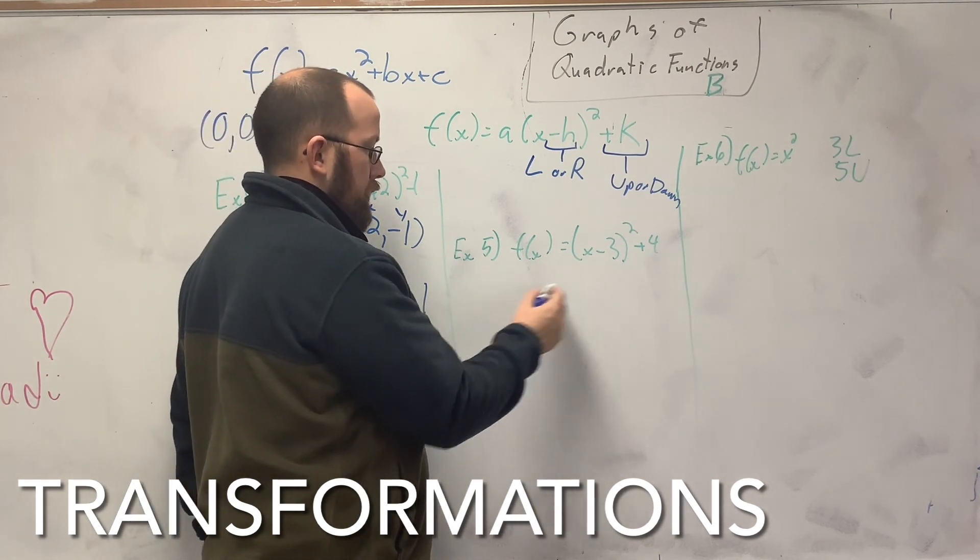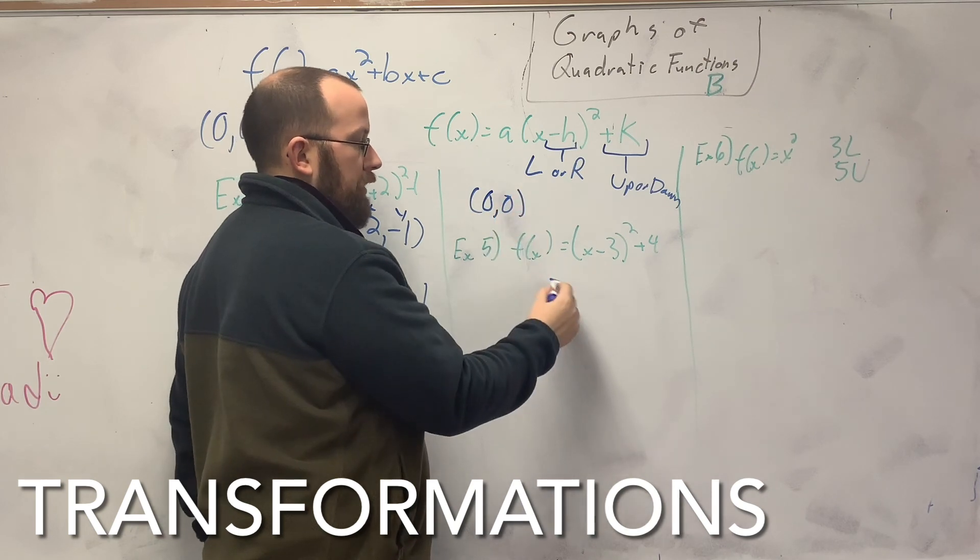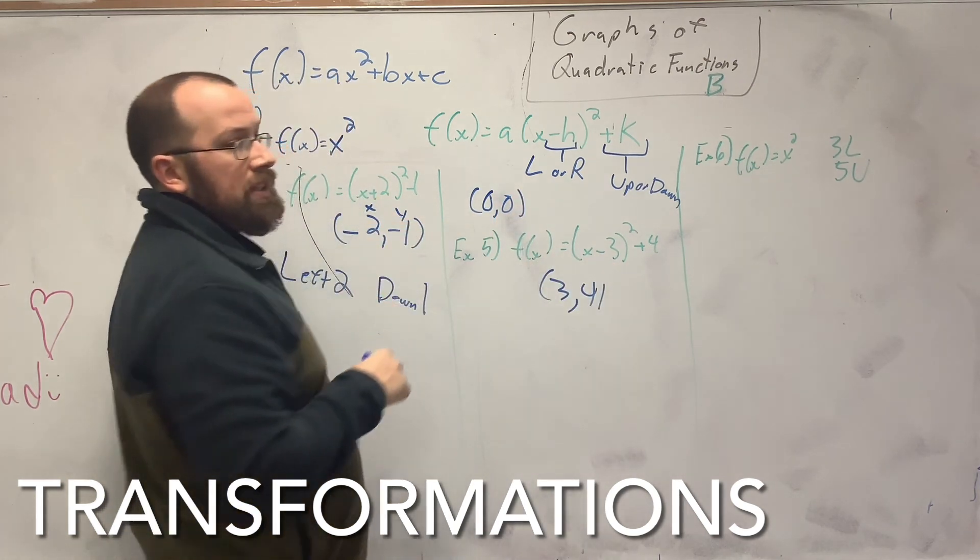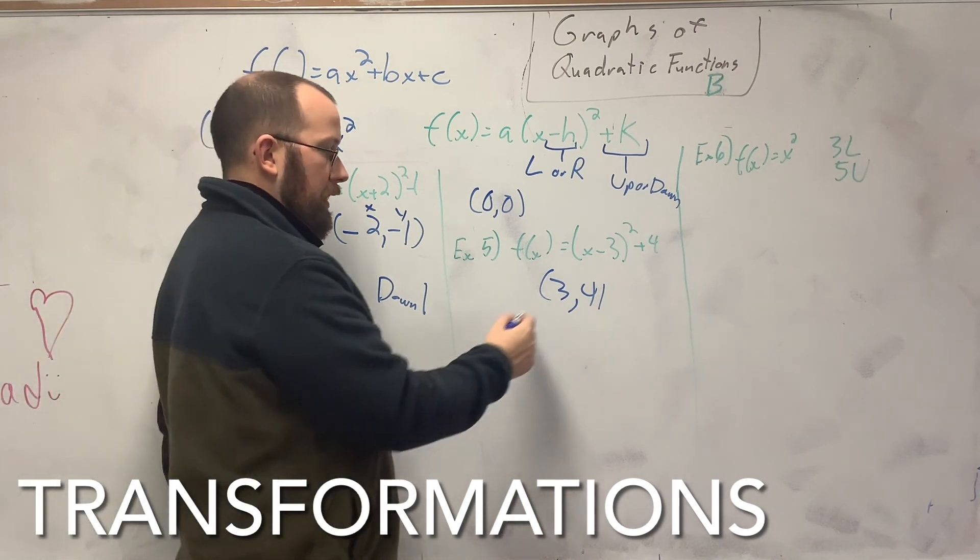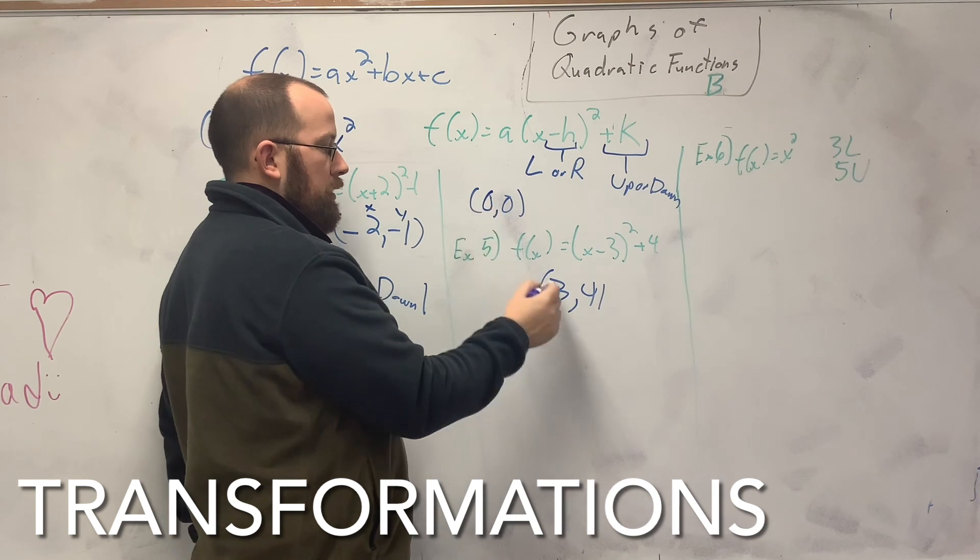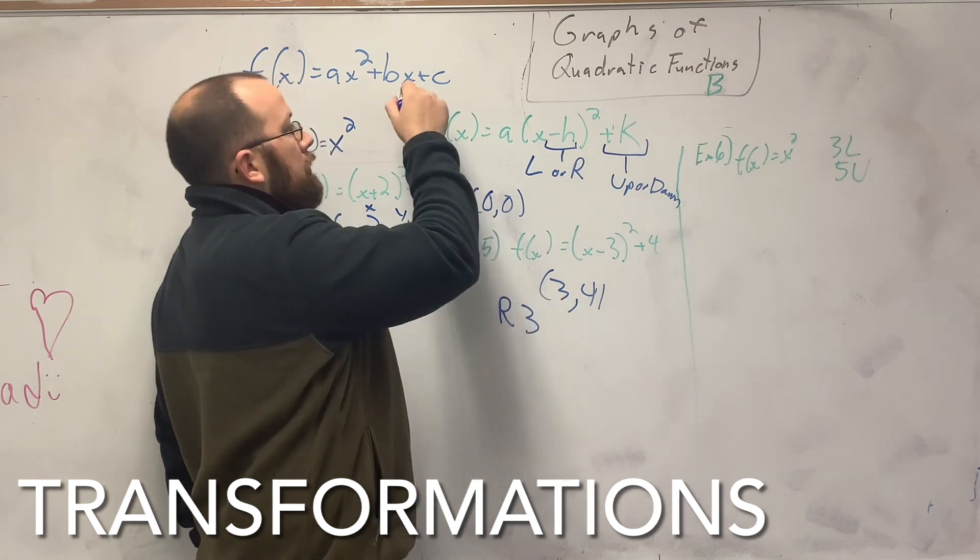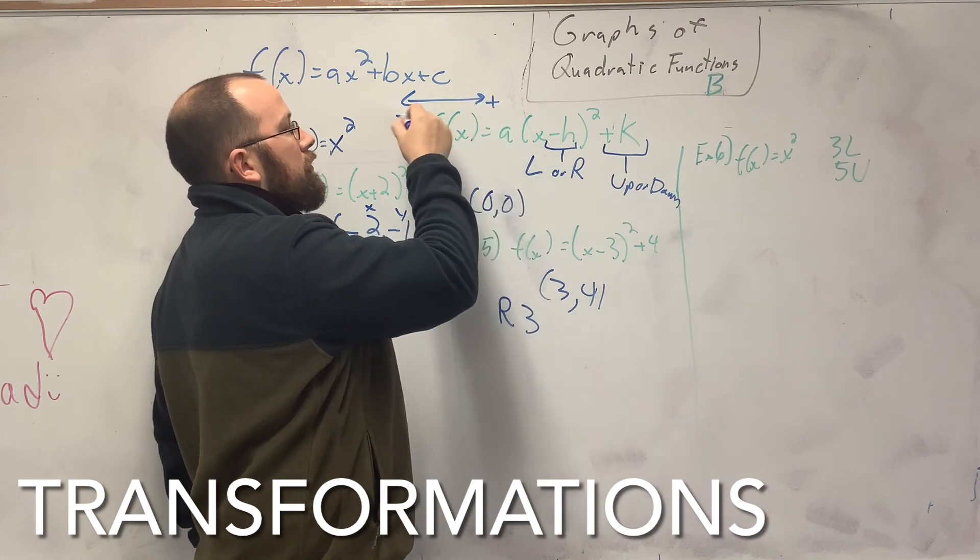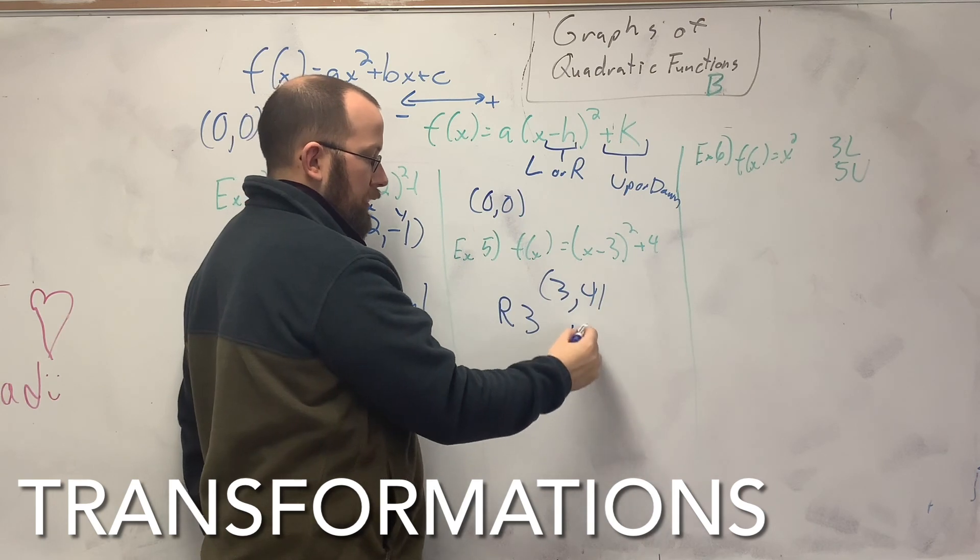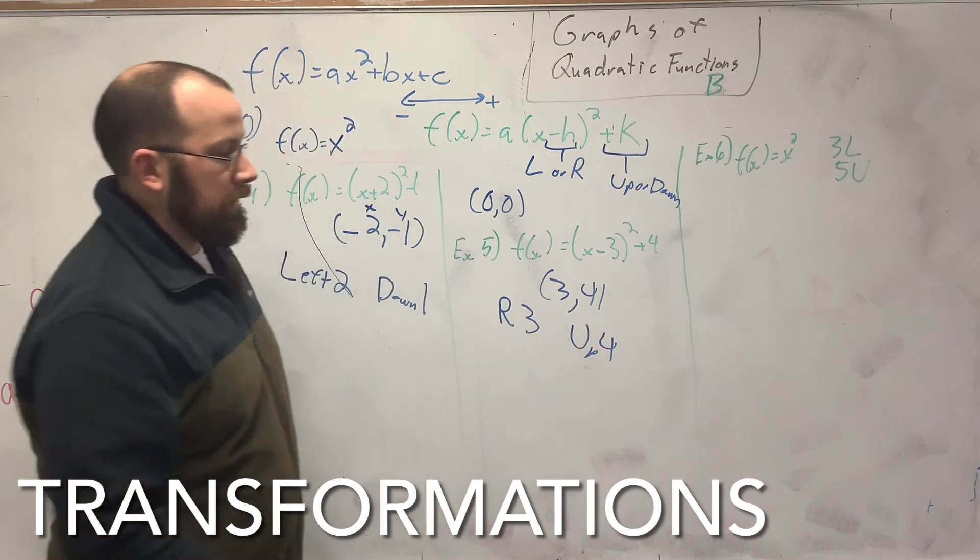So here we go. I started at (0, 0) again. My vertex here is (3, 4). Make sure you switch the sign of what's inside there, or you're going to mess the whole thing up. So I was at (0, 0). Now I'm at (3, 4). So how many did I move? I moved to the right 3, because positive, negative. Now 4, I moved up 4. And there you go.